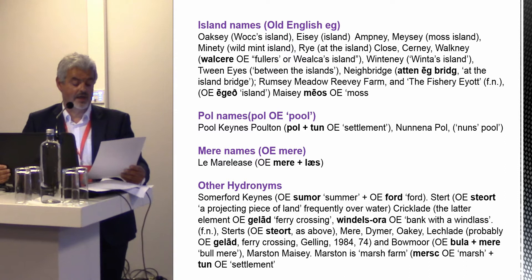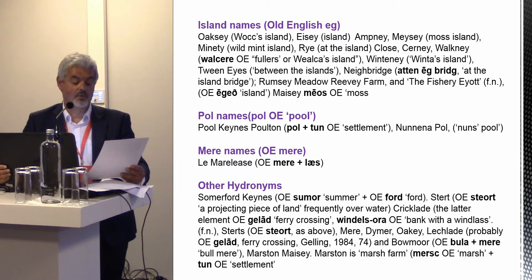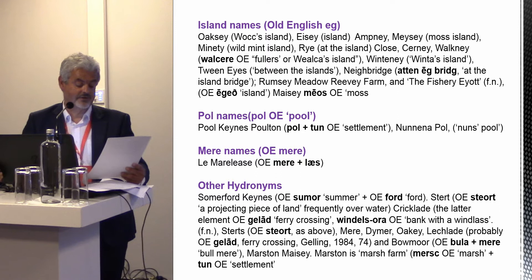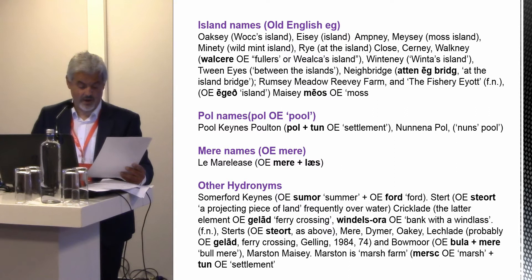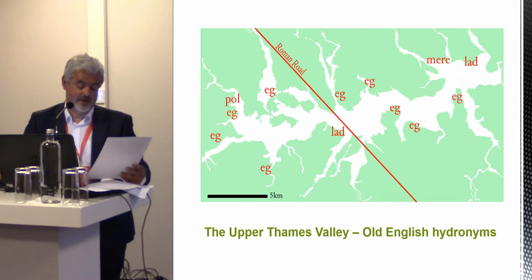In the eastern part of the mere are islands referred to in the place names Rumsey Meadow — an island name — Revy Farm, and the fishery Eyot, meaning an island. This mere is also bordered by hydronyms including Sturt, Mere, Dimmer, Okei, Lechlade — again a ferry crossing — and Beaumere, meaning Bull Mere. Between the meres lies Marston Meysey: Marston is Marsh Farm, but the Meysey element is Moss Island. The concentration and distribution of hydronyms in the area between Oxey and Cricklade strongly suggests the presence at a time in the past of a large body of water some 23 kilometres long.